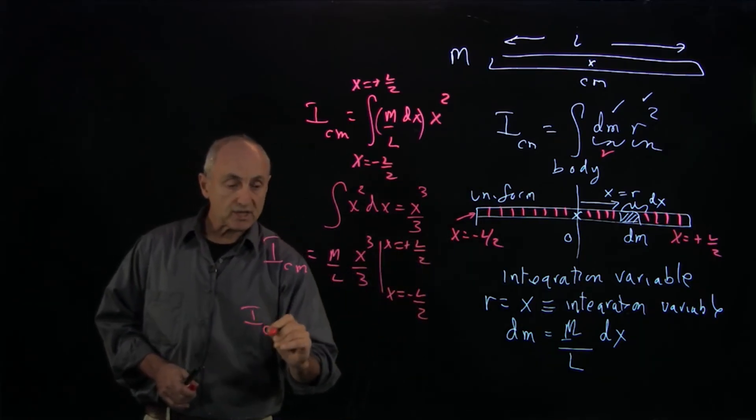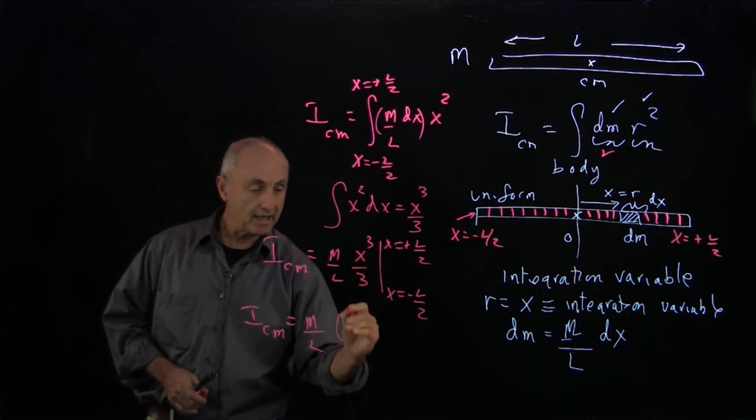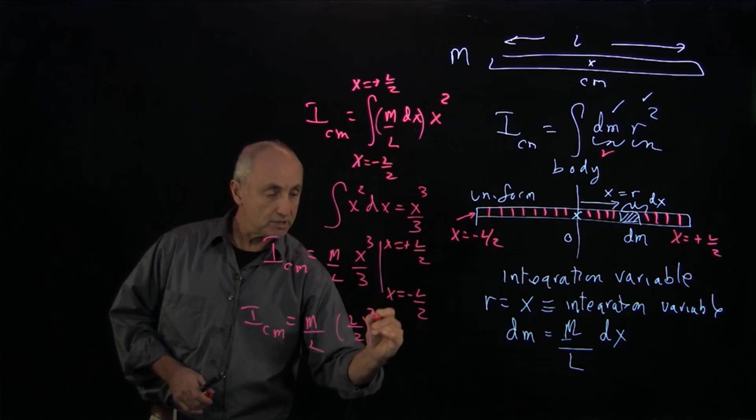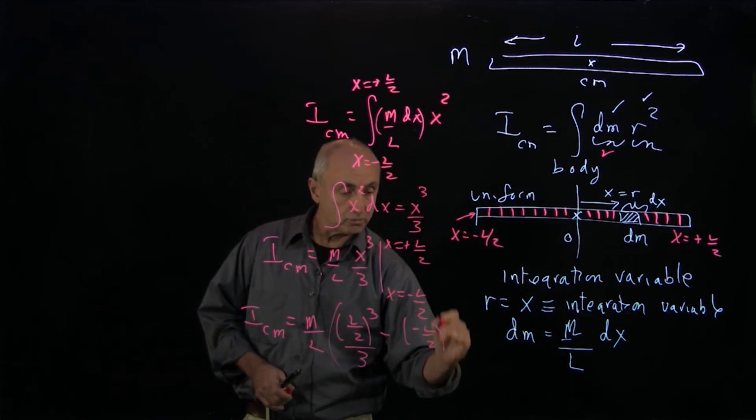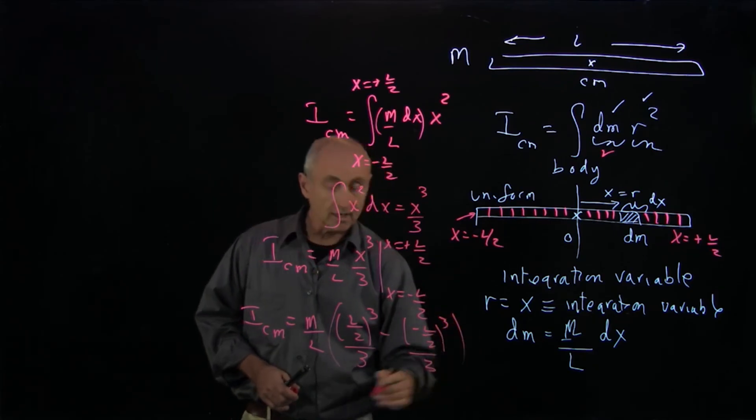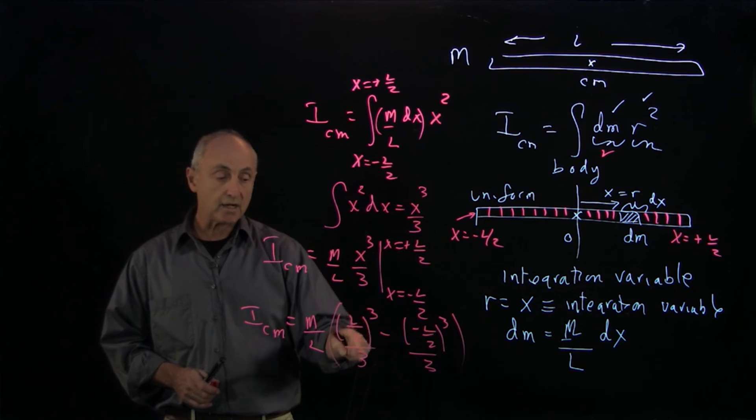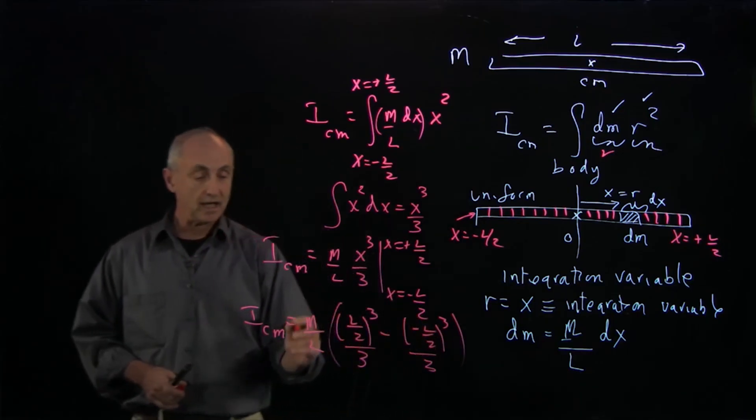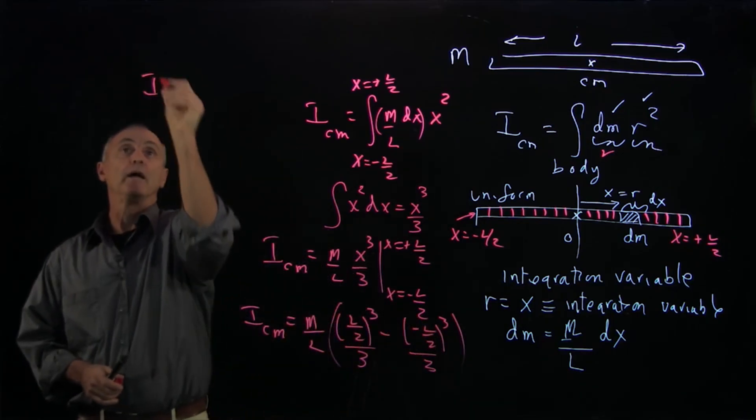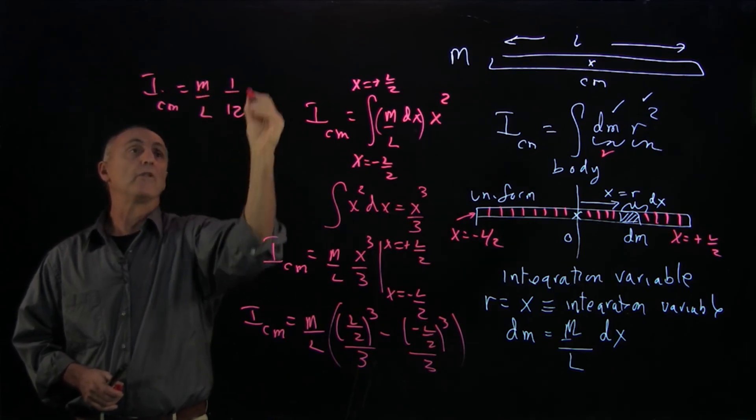When you evaluate the limits, what we get is m over l times l over 2 cubed divided by 3 minus minus l over 2 cubed divided by 3. 1 over 2 cubed is an eighth, divided by a third, that's a 24th. 24th minus a 24th is a 12th. So what we get for I_cm is m over l times a 12th l cubed.